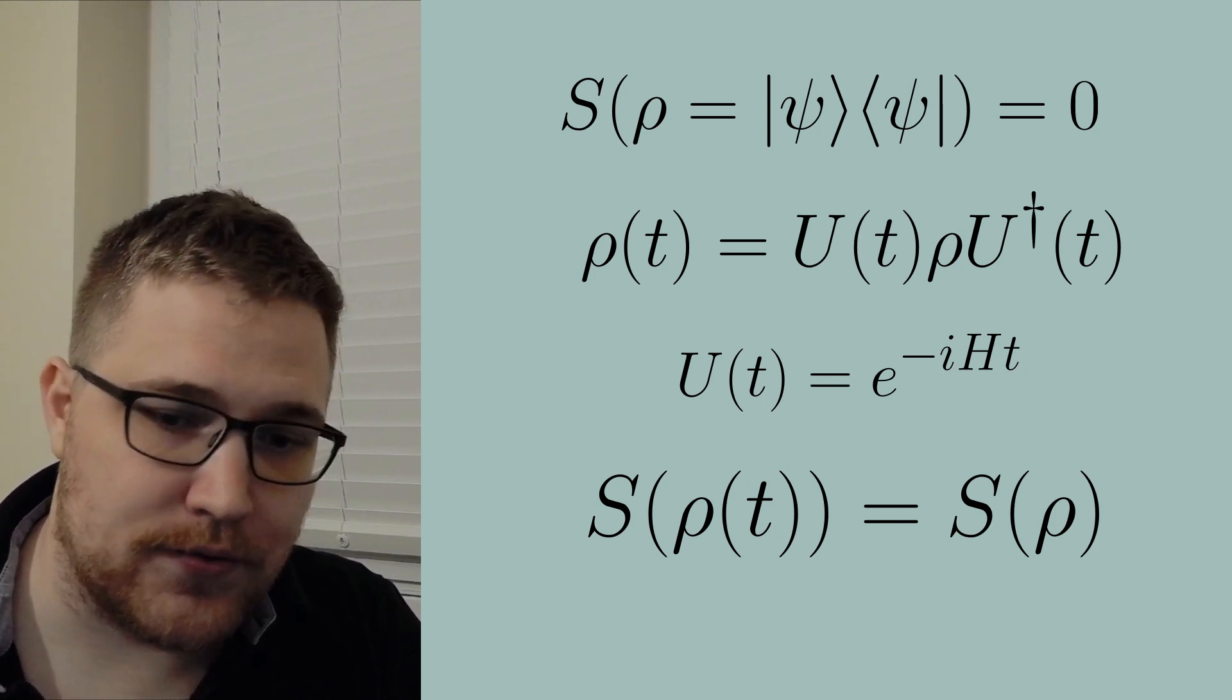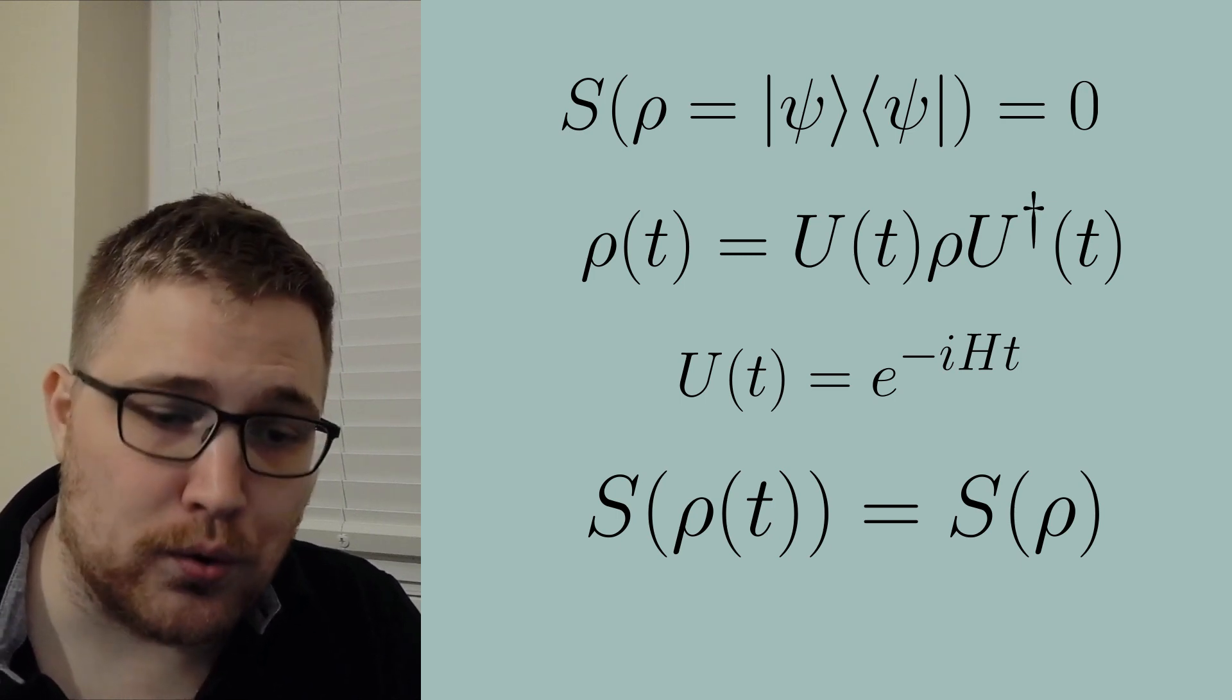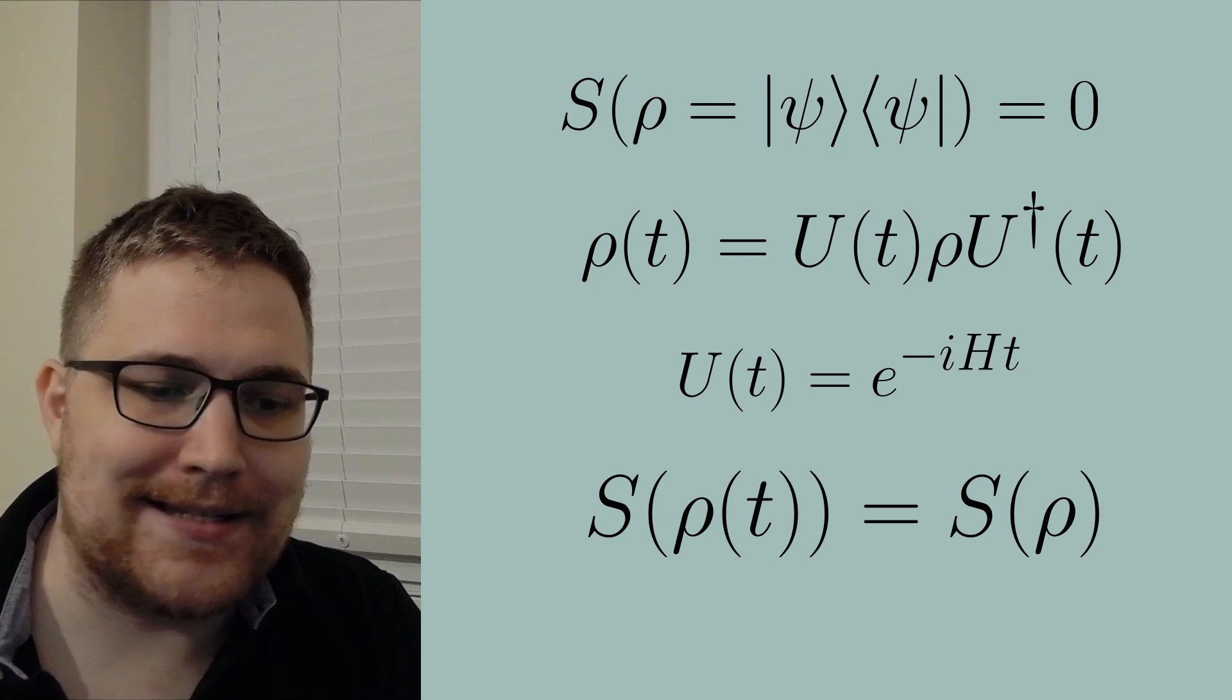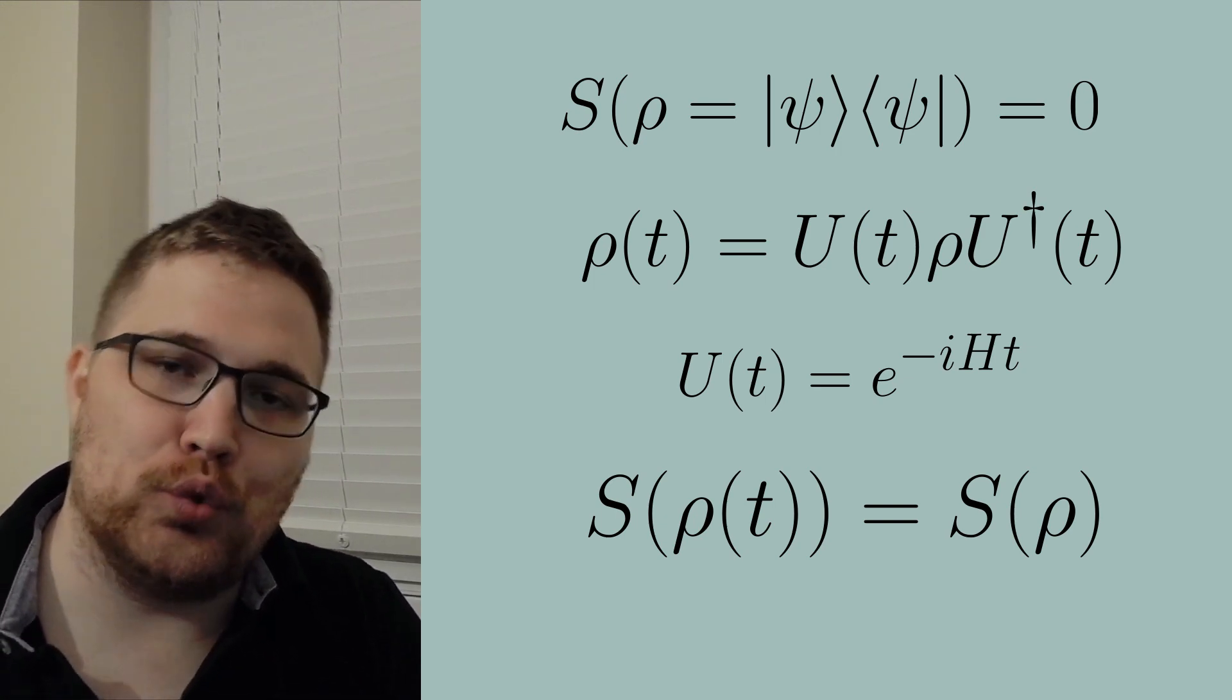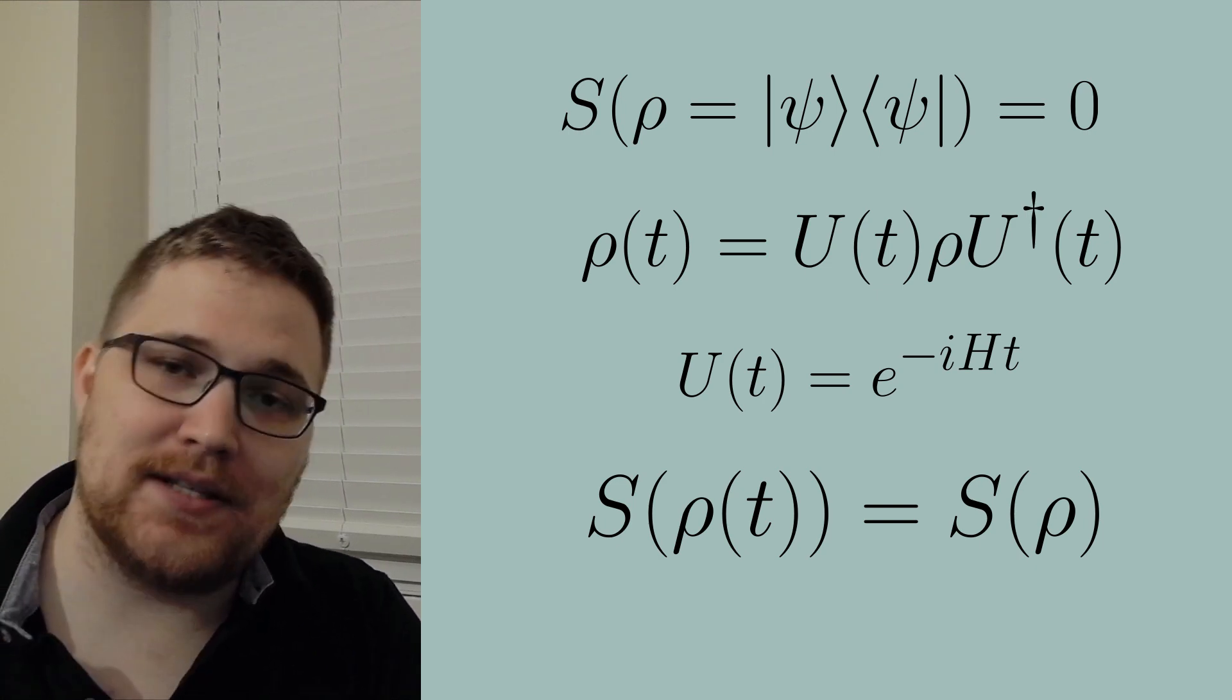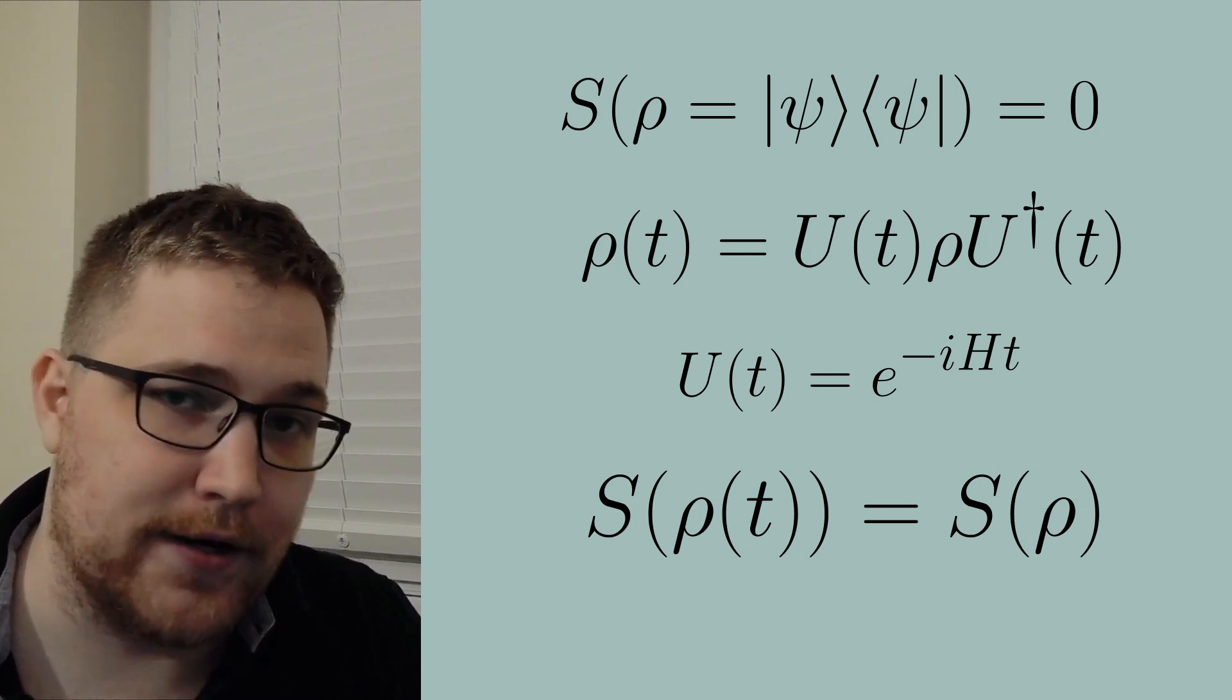So when does entropy increase? Well in the case of a subsystem of our total system its entropy can increase. This is known as entanglement entropy and our unitary dynamics will usually entangle the full system's subsystems. But this is a pretty deep topic and we will save that for a later video.